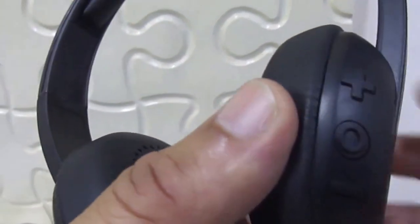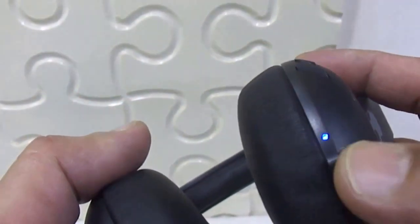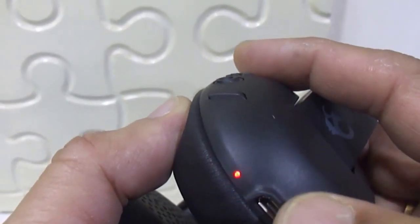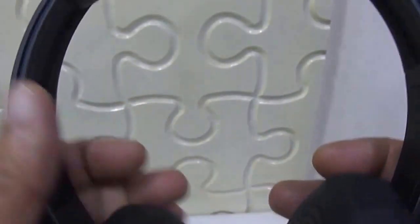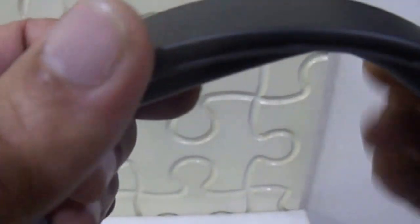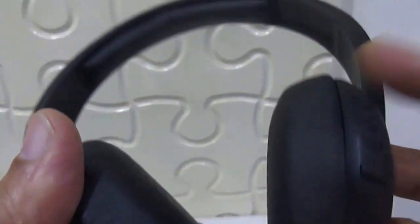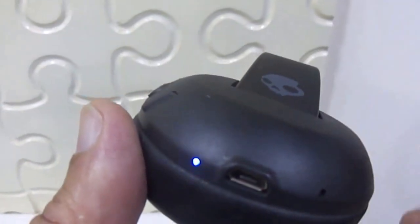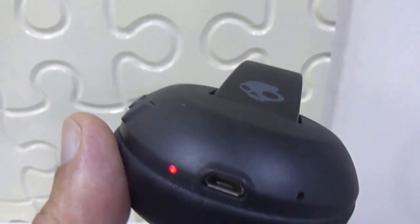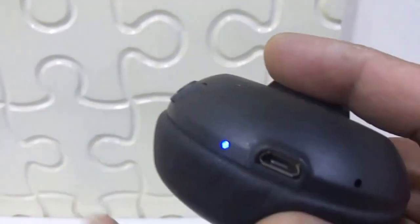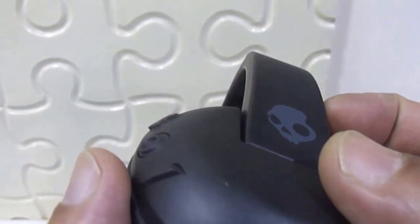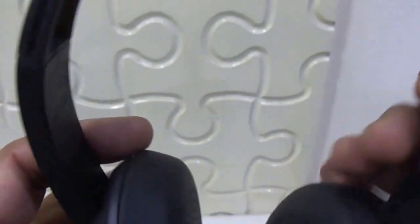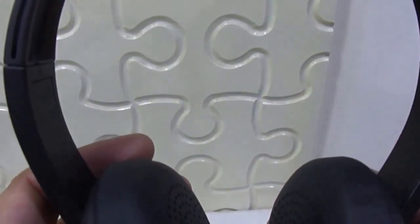It can be charged here by plugging in your charger and it charges very fast. The company is providing one charger along with this, and even if by chance you lose the charger supplied by the company, then with the ordinary charger of your smartphone you can charge these headphones. That is again a plus point of this Uproar wireless headphones.